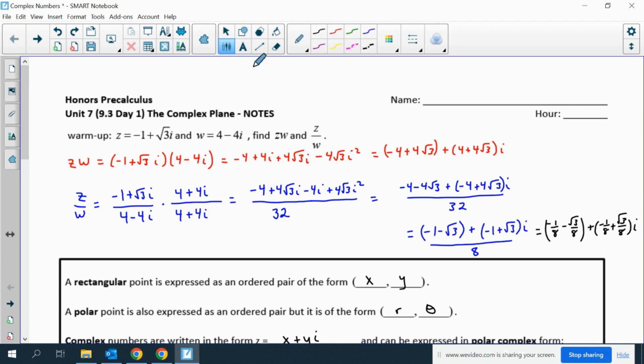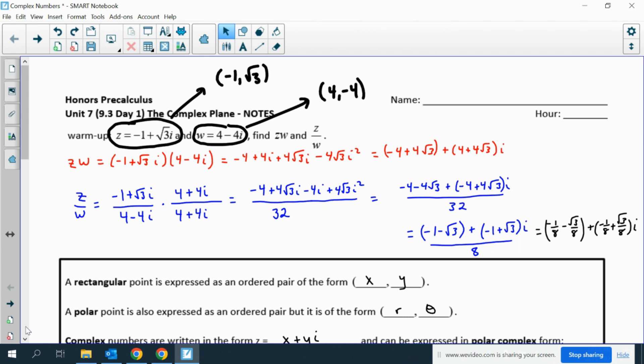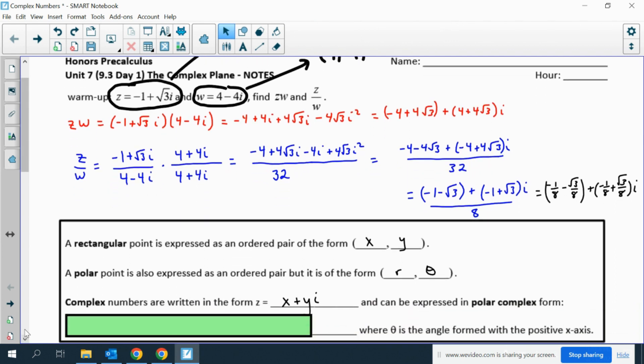From the warm-up, I could take w and write this complex number as the point (4, negative 4). I could take z and write that as the point (negative 1, square root of 3). You basically just take the real part, write that as the x, and the complex part, and write that as the y.